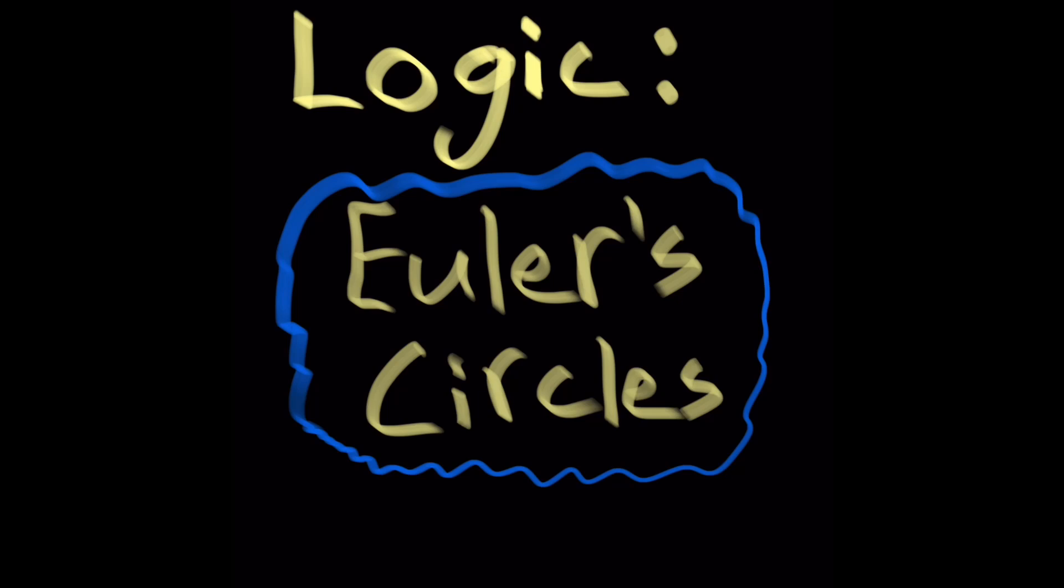In logic, we can use Euler's circles to represent categorical propositions. This comes from the mathematician Leonard Euler. He used two circles, one circle representing everything that belongs to the subject S, and a second circle representing everything that belongs to the predicate P.